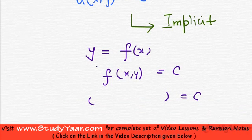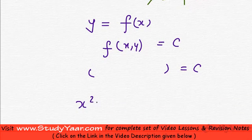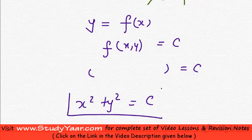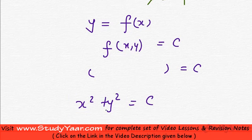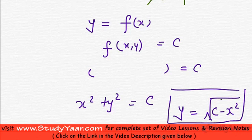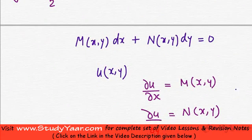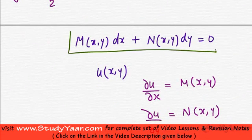We could solve the implicit solution to arrive at an explicit solution. For example, if x² + y² = c, that is an implicit solution because we have f(x,y) = constant. However, if y = √(c - x²), then that is the explicit solution.